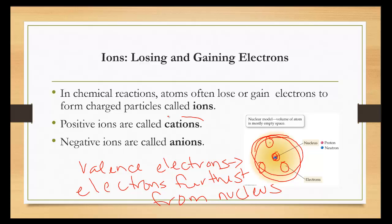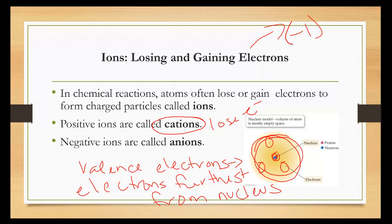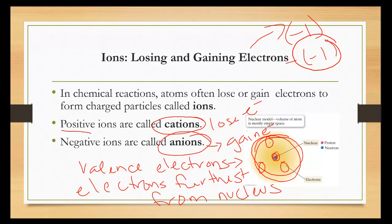Positive ions are called cations. In order to become a cation, you have to lose electrons. Electrons are negatively charged, so if you lose a minus 1, the two negatives cancel out to be positive, making it a positively charged ion. By contrast, anions are negatively charged — they gain electrons. You're gaining that minus 1, adding minus 1s, and it becomes a negative charge.